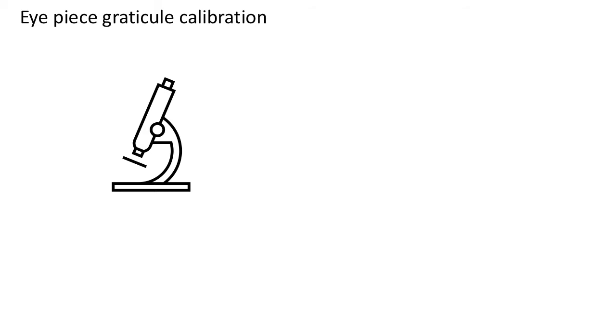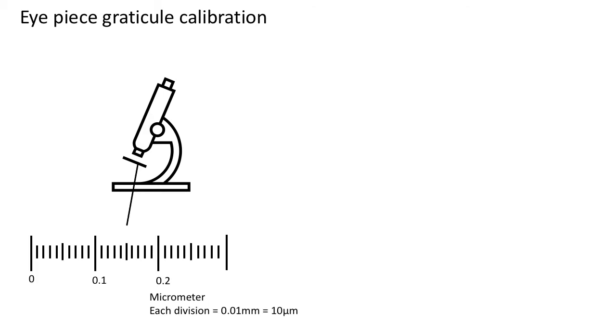On the slide there will be what is called a micrometer, and this micrometer tends to have divisions that are equal to 10 micrometers. So each of these divisions is equal to 10 micrometers. 0 to 0.1 measures 0.1 millimeters, 0 to 0.2 is 0.2 millimeters, and so on.